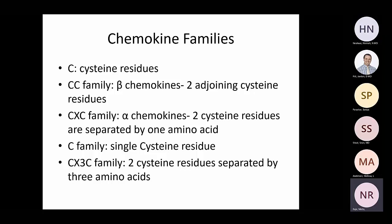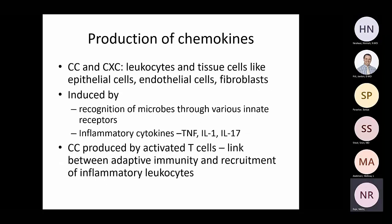The CC family is called beta chemokines; CXC are called alpha chemokines — the most studied. There is only one known CX3C chemokine. CC and CXC chemokines are produced by leukocytes and tissue cells such as epithelial, endothelial cells, and fibroblasts, induced by recognition of microbes via innate receptors or by inflammatory cytokines such as TNF, IL-1, or IL-17. CC chemokines are also produced by activated T cells, linking adaptive immune responses to recruitment.